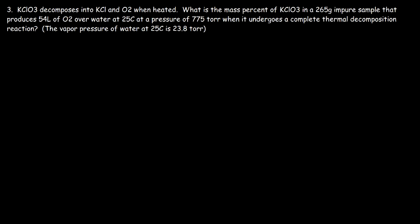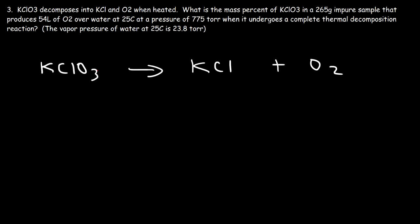The last problem: KClO3 decomposes into KCl and O2 when heated. The balanced reaction is: 2KClO3 → 2KCl + 3O2. We have three oxygen atoms on the left and two on the right; the LCM of 2 and 3 is 6, so we put a 2 in front of KClO3, a 3 in front of O2, and a 2 in front of KCl.